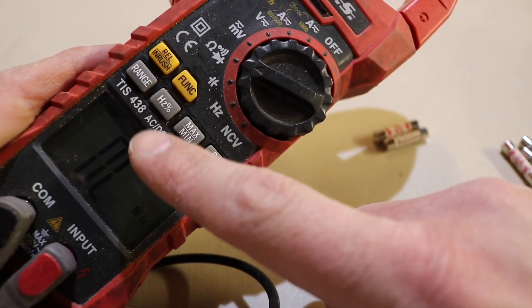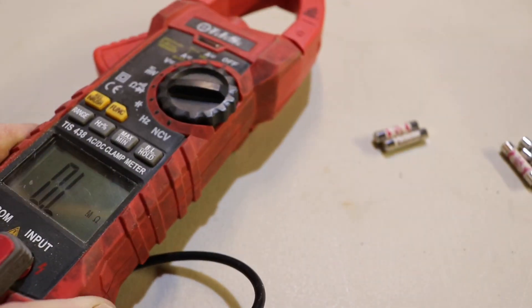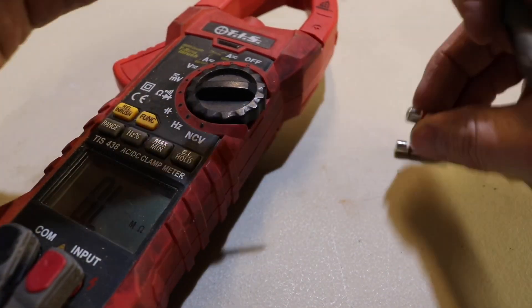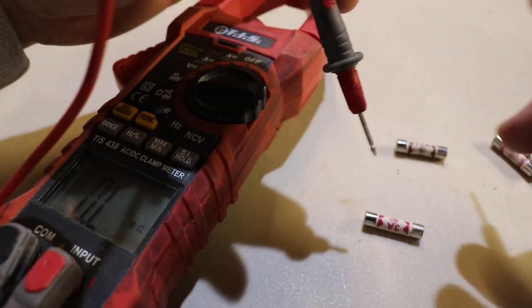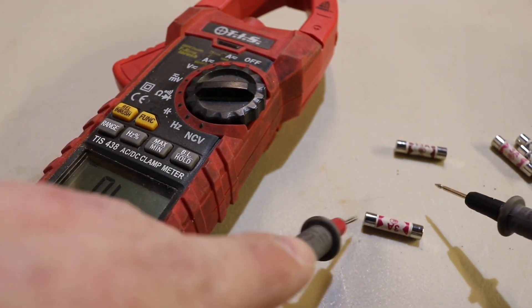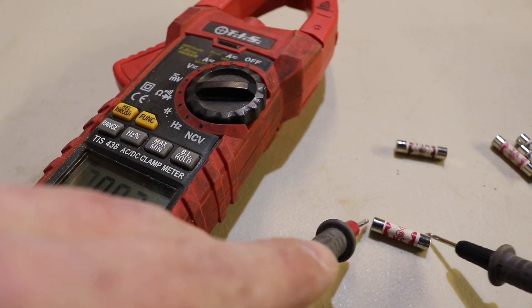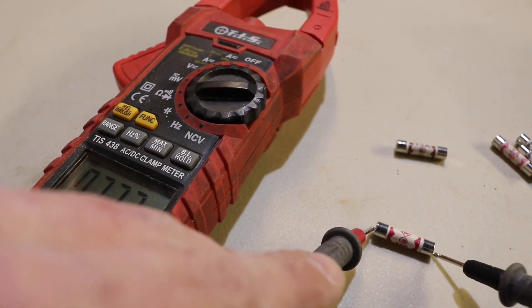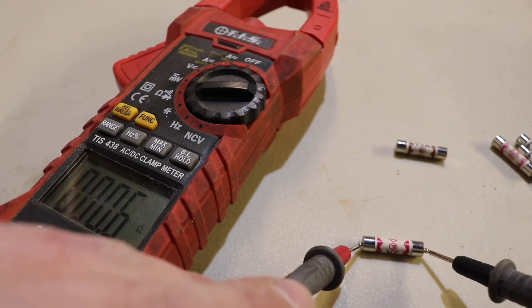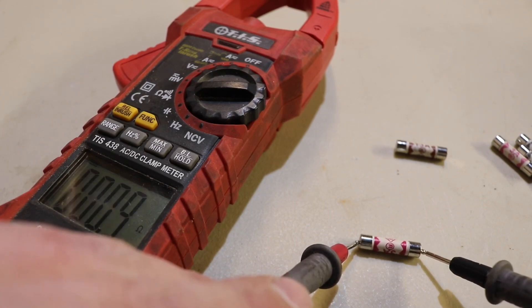Now we're going to test the auto setting first. I'll leave it there so you can just about see it. The orientation of the red or black does not matter because you're only testing for continuity. So we're going to pop our red on this side here and the black on this side here. And you should see something other than OL. There we go. Perfectly fine, that one.